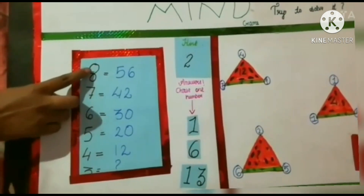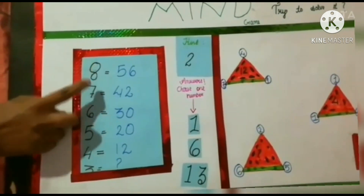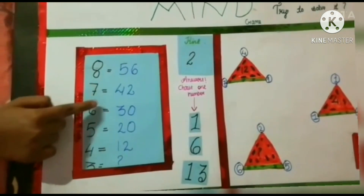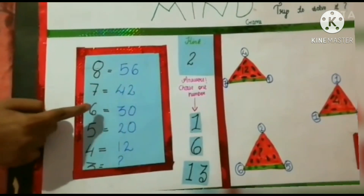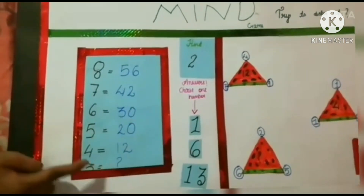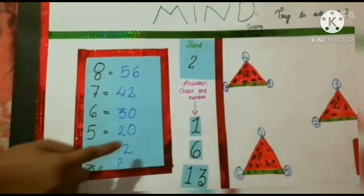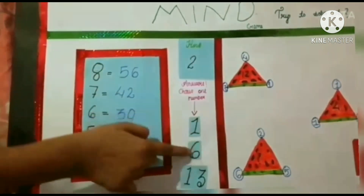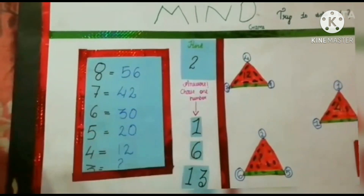So to find the answer: 8 × 7 equals 56. 7 × 6 equals 42. 6 × 5 equals 30. 5 × 4 equals 20. 4 × 3 equals 12. And 3 × 2 equals 6, so the answer is 6.